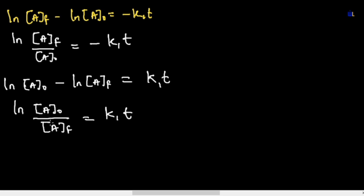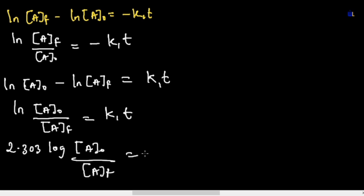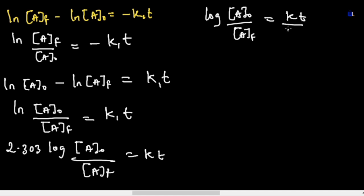We've derived four different versions of the same expression and will now derive a fifth. Since ln represents natural log, and natural log equals 2.303 × log base 10, replacing ln gives us: log([A]₀ / [A]f) = kt / 2.303.